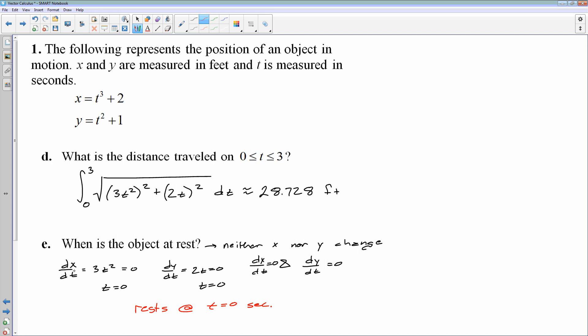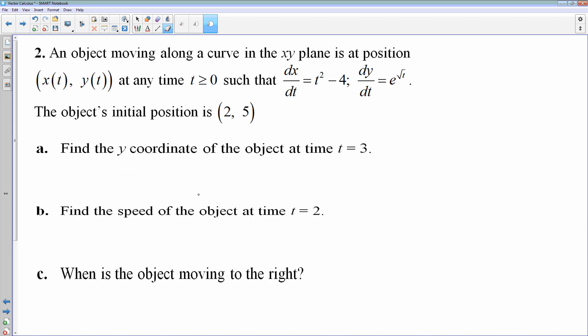Sometimes you will have times where the x is 0, but the y is not. So if it turned out, just for the sake of argument, that we had a problem where dx/dt equals 0 at t equals 1 and 3, and then you solve dy/dt equals 0, and you get t equals 0 and 3, then if this were the case, then the object rests only at t equals 3, because that's the only time where both x and y are 0.